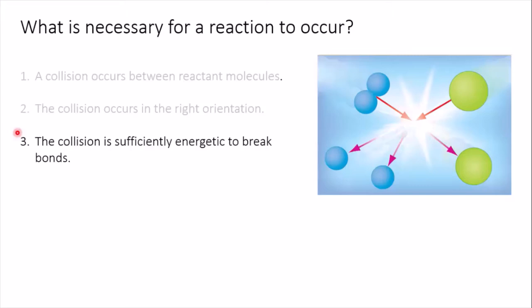Two molecules approaching one another may have everything going for them, but if they're moving too slowly, all that will happen is they'll gently bounce off each other and continue on their way. So the last requirement is that the molecules be moving fast enough, or in other words, have sufficient kinetic energy for the collision to break some bonds and cause a reaction.